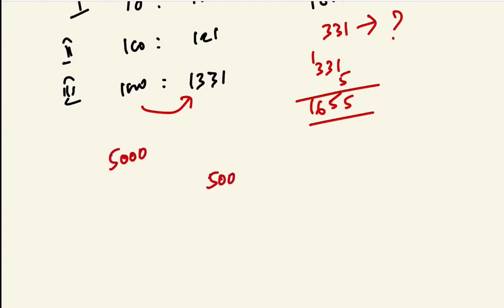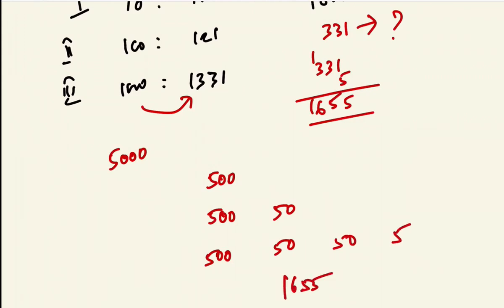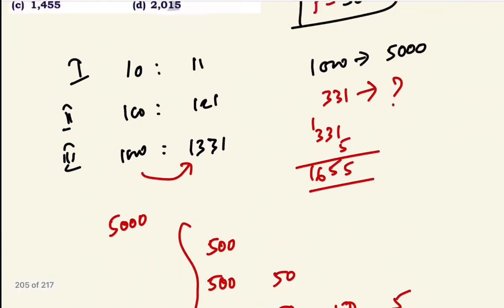10% of 5000 is Rs.500 first year. Second year on 5500 is Rs.550. Third year on 6050 is Rs.605. Total compound interest adds up. This method also confirms the answer of Rs.3,300 for Option B when principal is Rs.5,000.